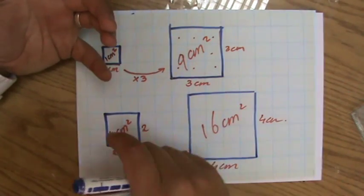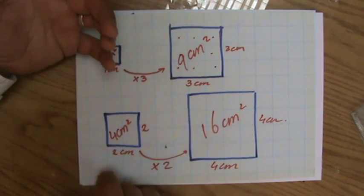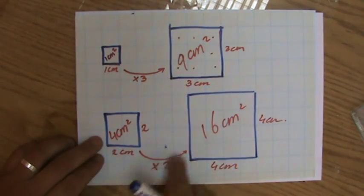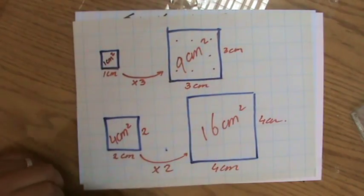So as you can see, you cannot just simply multiply the area by the scale factor to get the new area. Because 4 times 2 is not 16. 1 times 3 is not 9.